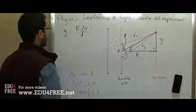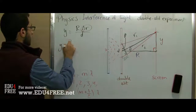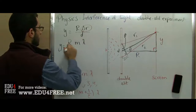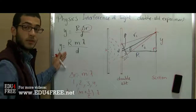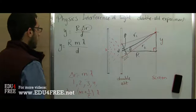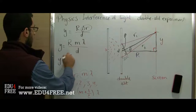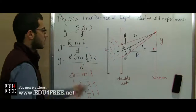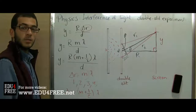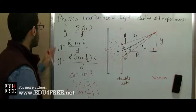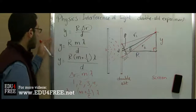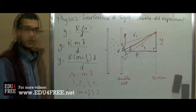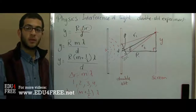Substituting into our formula, y equals R times m times lambda over d in the case of constructive interference or bright fringes. Or y equals R times (m + ½) times lambda over d in the case of destructive interference. This is how we get the distance between two successive fringes — bright or dark spots — in Thomas Young's experiment. I hope it was clear for you. Thank you for watching, see you next time.